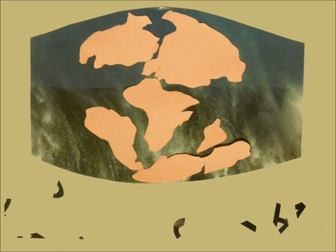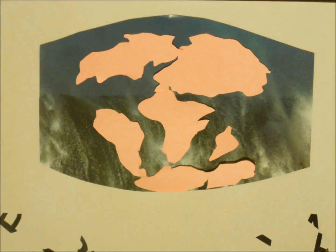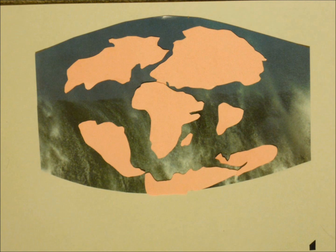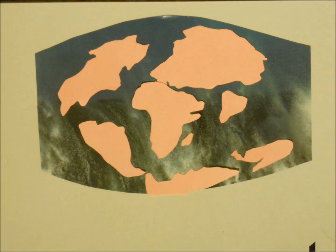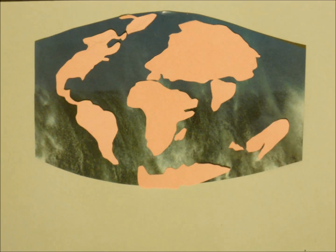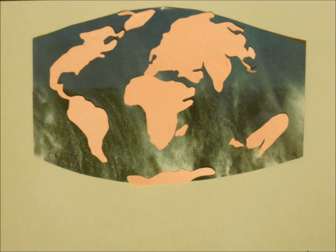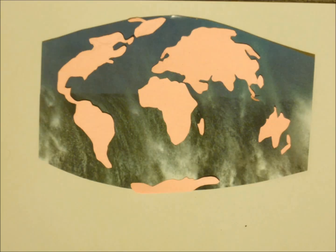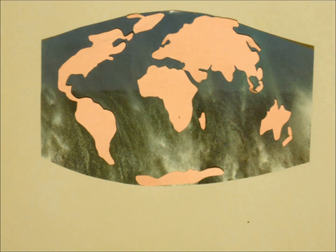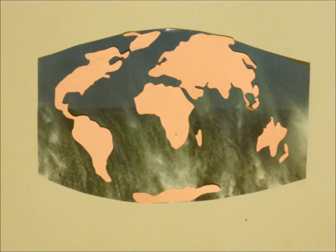The rift that formed in the southern landmass developed a Y-shaped fracture which sent India on a northward journey. This rifting continued for millions of years, until it eventually became the present formation.